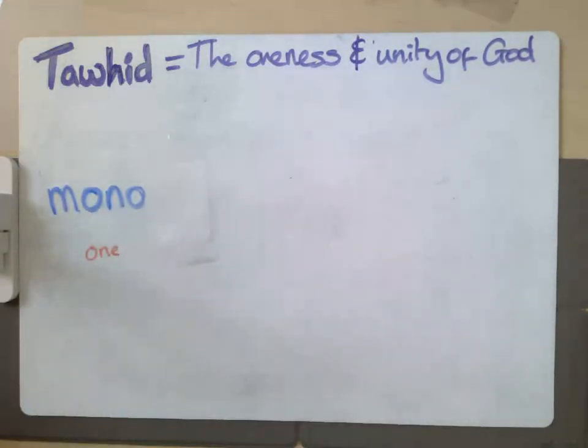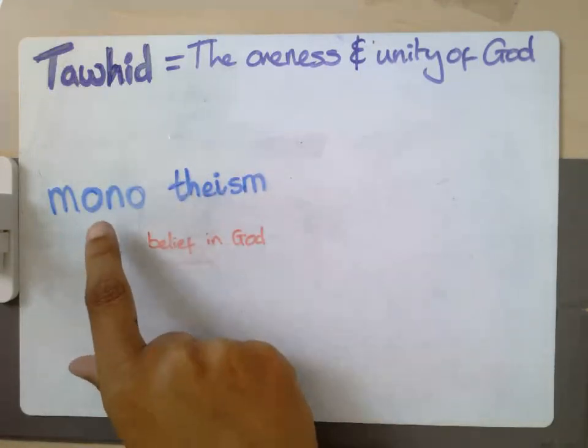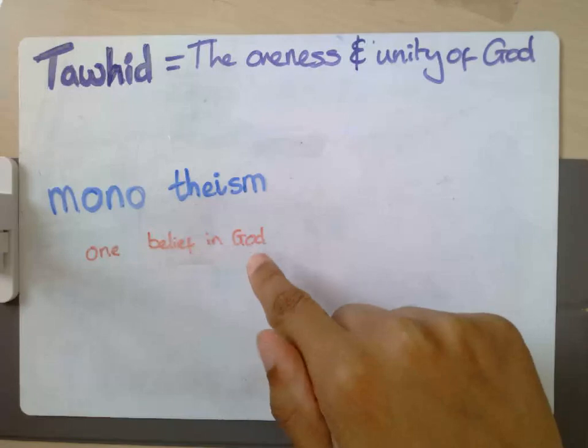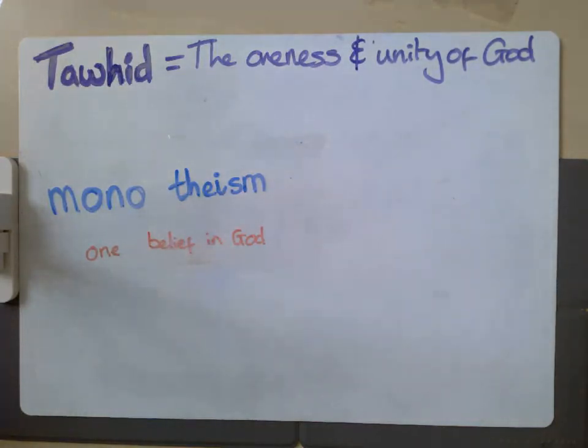So surely Tawhid just means that Muslims are monotheists. Mono meaning one and theism meaning belief in God. And whilst that is true, we can tell from the belief or the definition of Tawhid that Muslims are monotheists, there's a lot more to it than that.